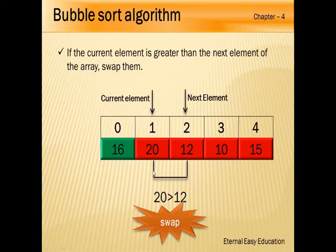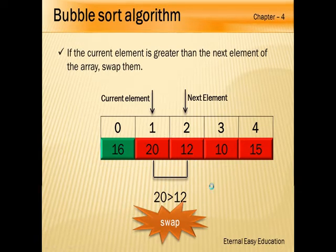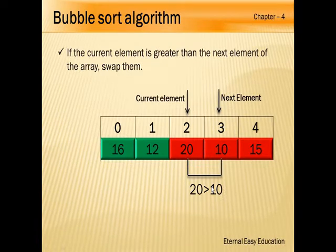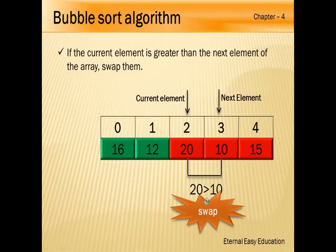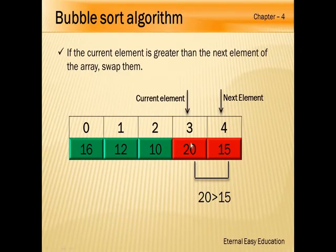Next, 20 and 12 are compared. Since 20 is greater, we move 20 to the next position and bring 12 forward — that is swapping. So we have 16, 12, then 20. Now compare 20 with the next element, 10. Since 20 is greater than 10, we swap: the 10 moves left and 20 moves right. Now compare 20 with 15 — 15 is less, so 20 moves to the last place.